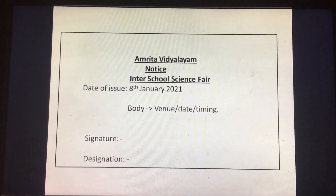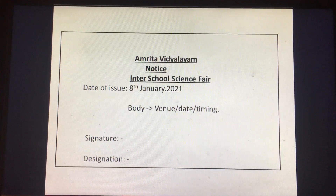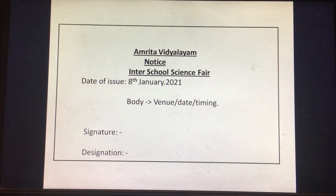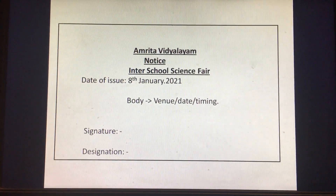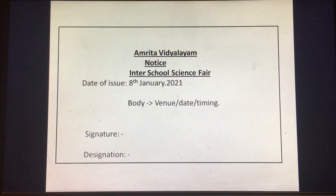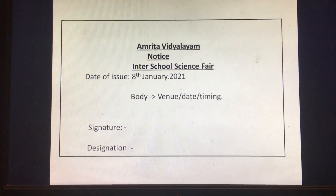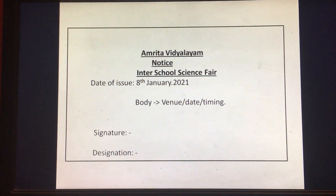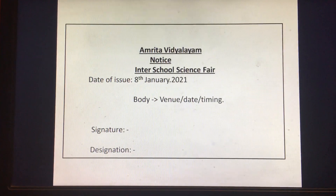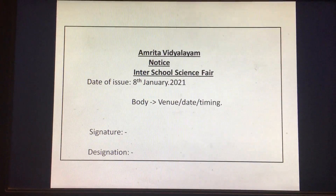Now let us look at the format. Always draw a box after writing the notice. First is the school or organization name — write it in capital letters or block letters. Then write 'NOTICE'. Then give the date. Then the body. Then the signature of the person issuing the notice, and under it, the designation.